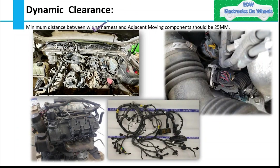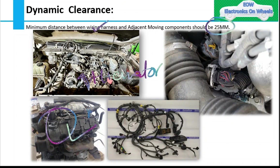Moving on to dynamic clearance — as the name suggests, this clearance is between the wiring harness and adjacent moving components. You must maintain a minimum distance of 25mm from moving components. Moving components include rotating and vibrating parts, such as engines, motors, and alternators. All of these fall under this category, and the engine in particular has maximum vibration.